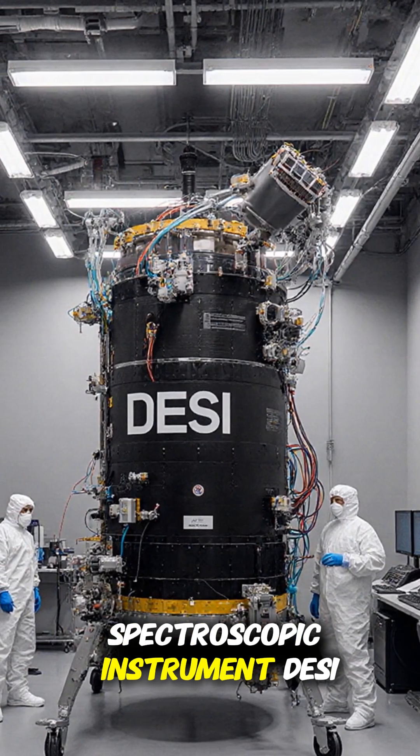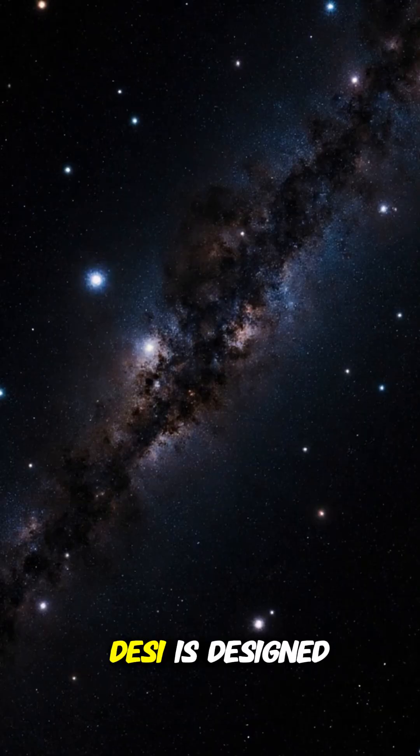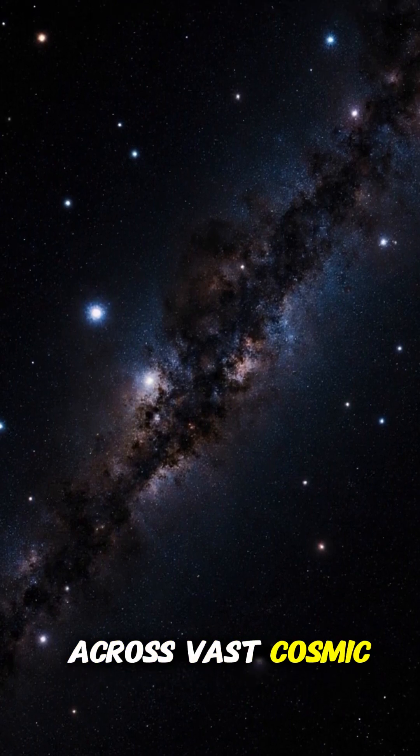The dark energy spectroscopic instrument, DESI, is used to map the distribution of galaxies and quasars. DESI is designed to observe these celestial objects across vast cosmic distances.